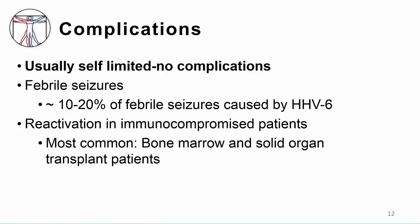This infection typically has a benign course. A subset of patients may develop febrile seizures and rarely meningitis and encephalitis. Febrile seizures are generalized seizures that are brief and occur with fever. They occur in children aged 6 months to 6 years and are not epilepsy; most people with febrile seizures do not go on to develop epilepsy. 10 to 20% of febrile seizures are caused by HHV6.